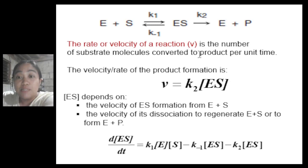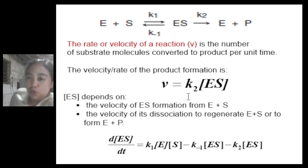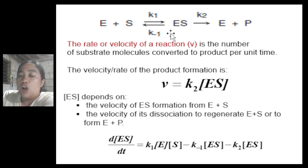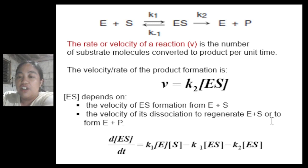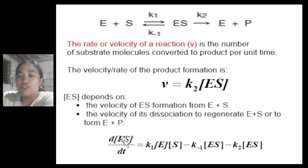The rate or velocity of a reaction, denoted by V, is the number of substrate molecules converted to product per unit time. It is calculated using the formula: V = K2 multiplied by the concentration of the ES complex. The concentration of the complex depends on the velocity of ES formation from E plus S and the velocity of its dissociation to regenerate E plus S or to form E plus P. The change in ES concentration over time is expressed as an equation representing the steady-state assumption.